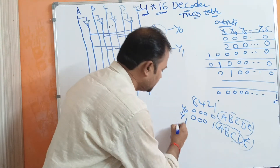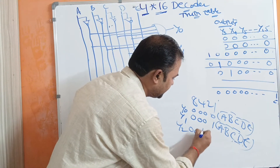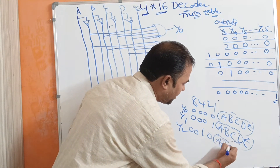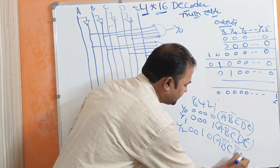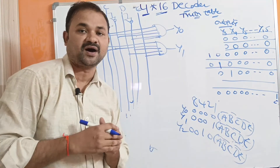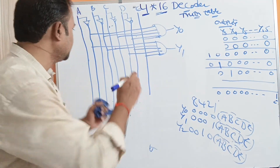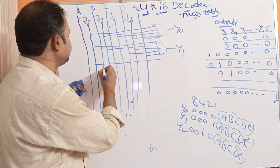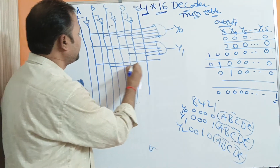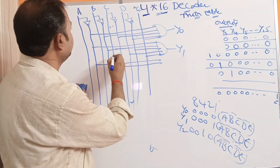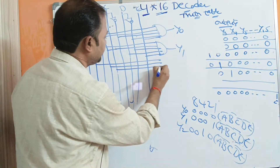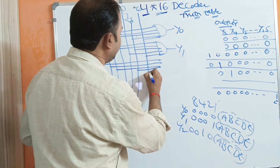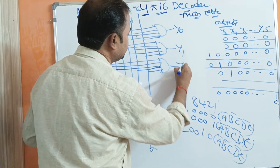Now let us write Y2. When Y2 is active, the inputs are 0, 0, 1, 0. So 0010 means A-bar, B-bar, C, D-bar, and enable input E. So A-bar is this line, B-bar is this line, C is this line, D-bar is this line, and enable input E is this line. This AND gate represents Y2.